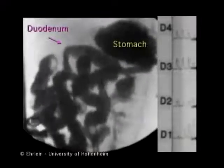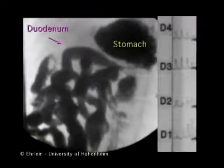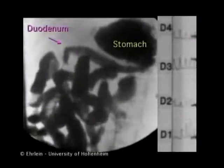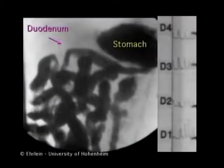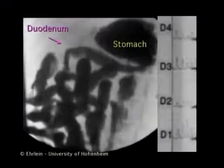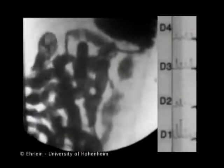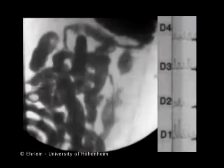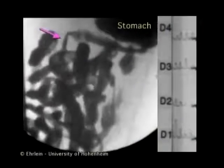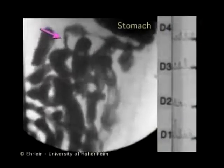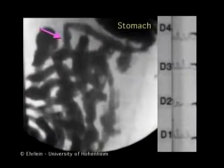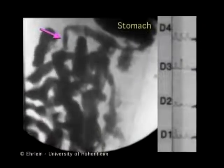Rapid peristaltic and antiperistaltic waves with enterogastric reflux also occur in the fed state. Here you see the stomach and the small intestine after a viscous oleic acid meal. Rapid antiperistaltic waves move along the jejunum, propelling chyme back into the stomach.